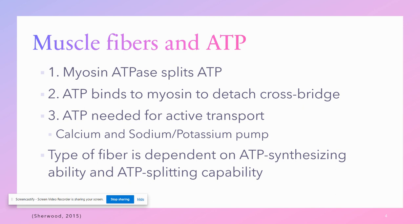Muscle fibers and ATP: muscle cells require ATP just like all cells in our body. The type of muscle cell is dependent on the amount of ATP required, how well it uses it, and how it obtains it. There are really three to four main ways that muscle cells use ATP. The first is that myosin ATPase is going to split ATP, providing the energy needed to complete the power stroke for the cross bridge. The second way is that ATP must bind to myosin in order for the cross bridge to detach from actin, signaling the end of the power stroke so the cycle can be repeated.